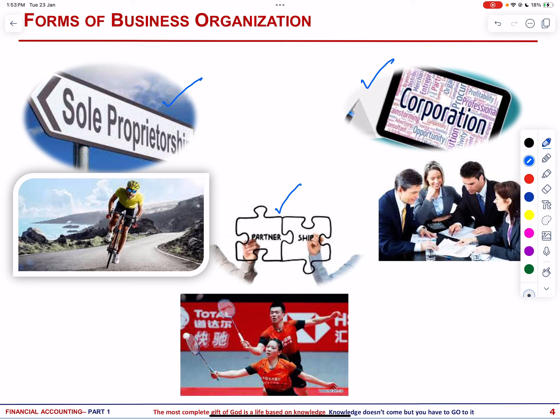The factors to consider when deciding the form of business include taxation. Sole proprietorships and partnerships generally receive more favorable tax treatment than corporations. Regarding legal liability, sole proprietors and partners are personally liable for business debts, while corporate stockholders have limited liability. Although there are more proprietorships and partnerships, corporations generate significantly more revenue.